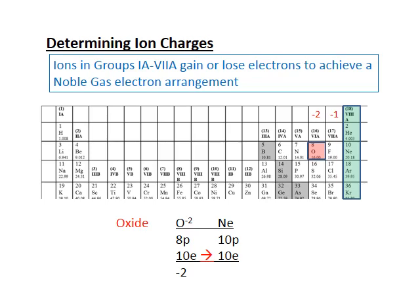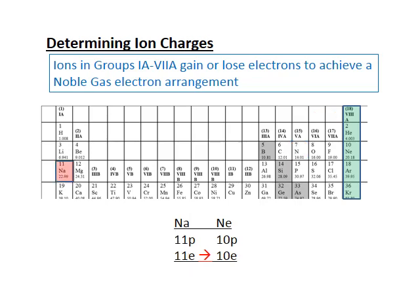Sulfur and selenium behave the same as oxygen, forming minus two ions named sulfide and selenide. Nitrogen needs to gain three electrons to achieve the same electron configuration as neon, giving it a negative three charge, and we call it nitride. Phosphorus does the same and is called phosphide.